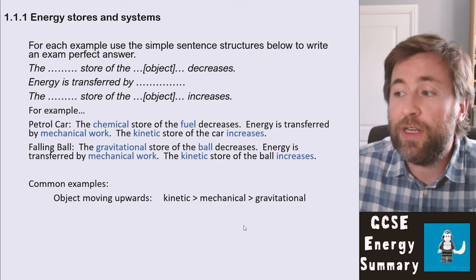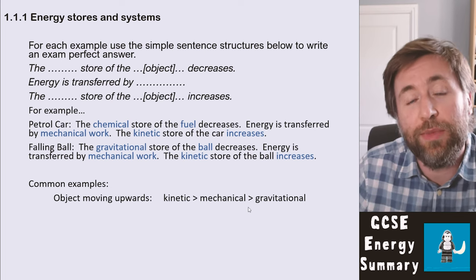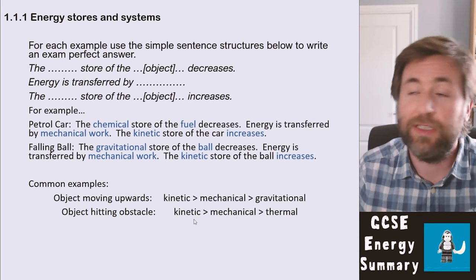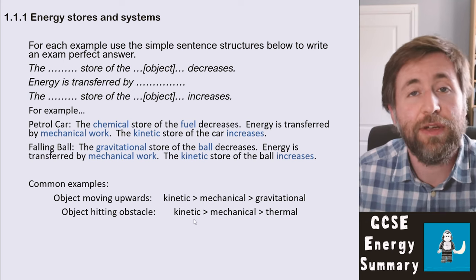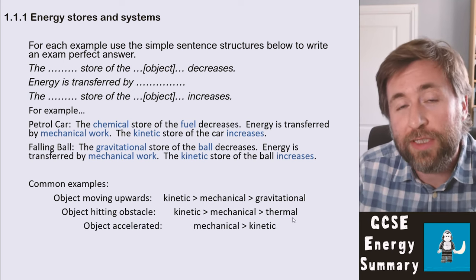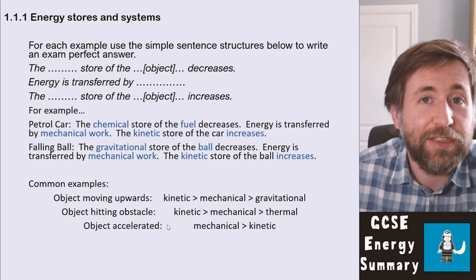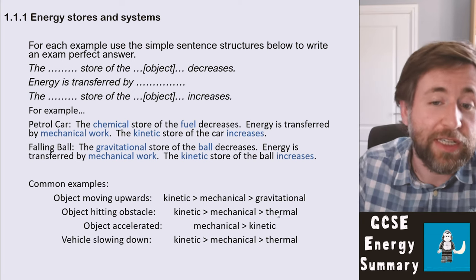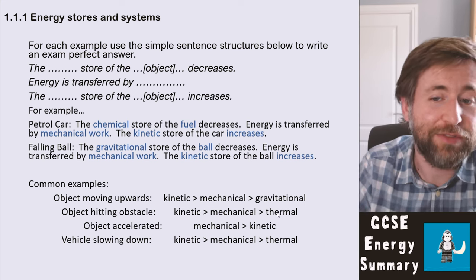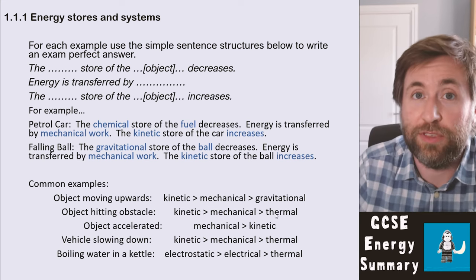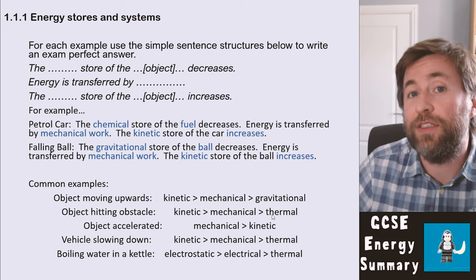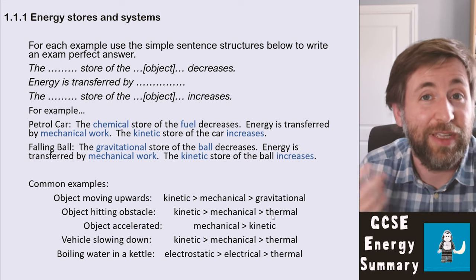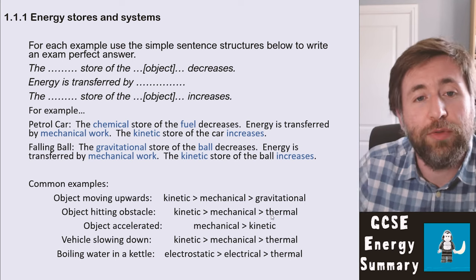Here are more common examples. Energy in an object moving upwards starts in the kinetic store and is transferred mechanically to a gravitational store. An object hitting an obstacle starts with kinetic energy, undergoes a mechanical transfer, and ends up heating the surroundings — a thermal store. A vehicle slowing down has kinetic energy mechanically transferred by the brakes to the thermal store of the surroundings. Boiling water in a kettle starts with energy in the electrostatic store of the mains, transferred by electrical working through the heating element to the thermal store of the water.